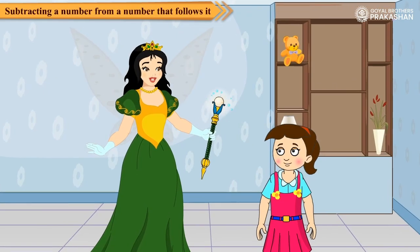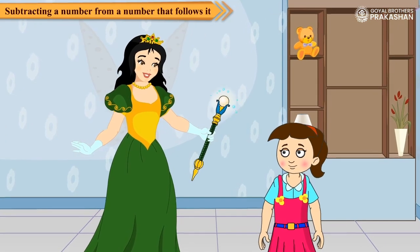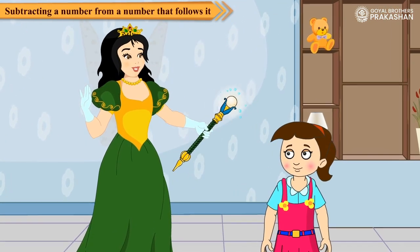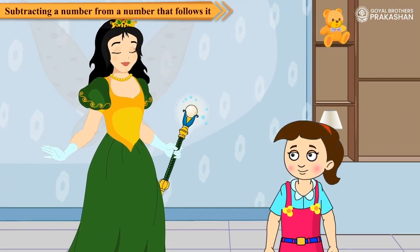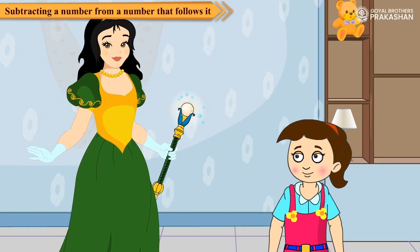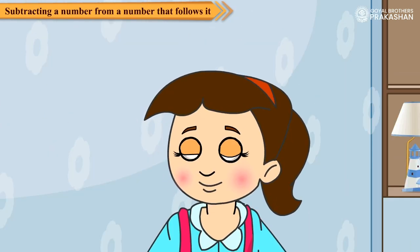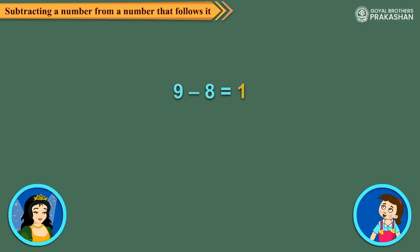Now, what will happen when we subtract a number from a number that follows it? See, if I subtract 8 from 9, we get 1. If I subtract 6 from 7, then the answer is again 1.